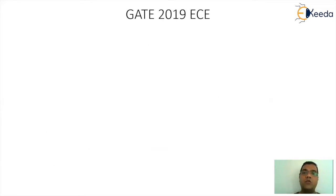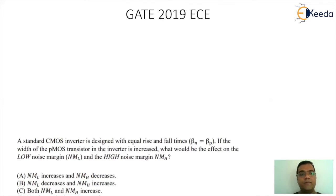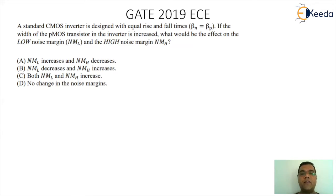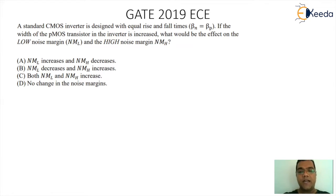The next question is from the GATE 2019 EC paper. The question says: a standard CMOS inverter is designed with equal rise and fall times, with VTN equal to VTP. The term VT corresponds to the conduction parameter. The conduction parameter for enhancement MOSFETs for N-channel is normally defined as K, so we have KN and KP as notation. Here the notations are slightly modified; they are noted as βN and βP.